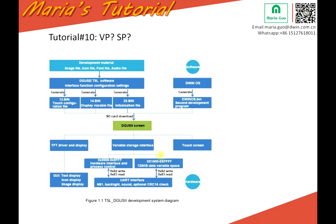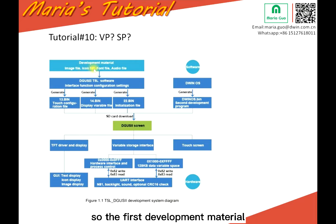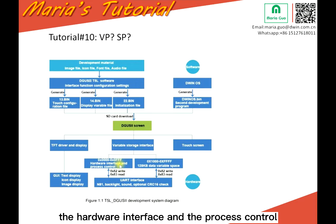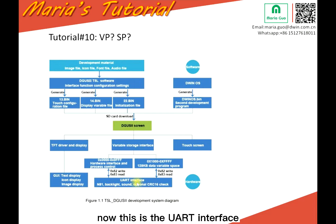Here is the T5L Degas development system diagram. The first development materials include the image file, icon file, font file, and audio file. The T5L Degas software generates files 13, 14, and 22. The SDK download includes the variable storage interface. This scope covers the hardware interface and process control, and this side is for the data variable space. This is the UART interface. This scope and this scope we normally call the VP address.